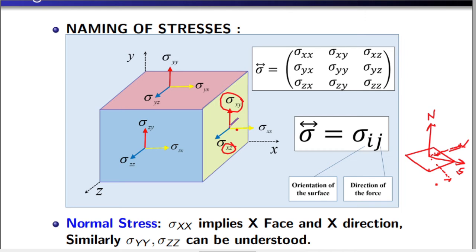If a stress acts in some other direction on the x-face, you simply resolve it into two components: one along the y-axis (sigma xy) and one along the z-axis (sigma xz). Similarly, sigma xx is obvious — it is acting on the x-face and along the x-direction. So the sign convention is very important: sigma ij means the first subscript i refers to the name of the face, and the second subscript j represents the direction in which the stress is acting.